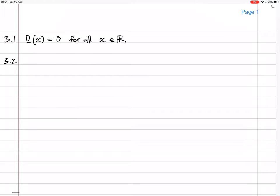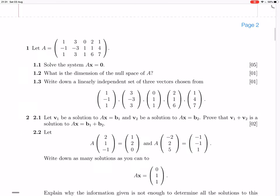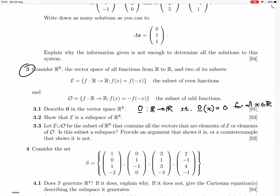3.2. Show that E is a subspace of R to R. So we've got to show that it's closed under linear combinations and it's not empty. It's got the zero vector in it, right? Zero of x equals zero, which equals zero of minus x. So that's there.